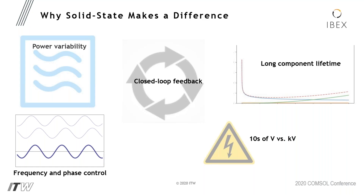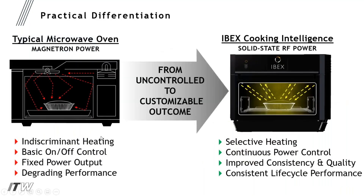A magnetron in a heavily used microwave can last 12 to 18 months, whereas solid-state power amplifiers for microwave generation can last many years — a big advantage. Additionally, the power supplies for these amplifiers operate on the order of tens of volts versus kilovolts for a magnetron. From the customer's perspective, these advantages need to translate into meaningful value for them.